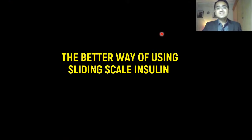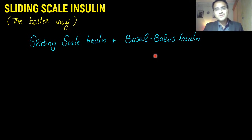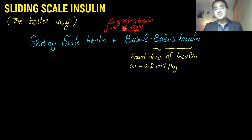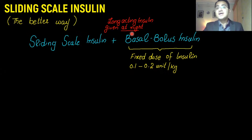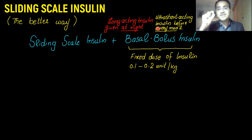The better way of using sliding scale insulin is to combine it with basal bolus insulin. In basal bolus insulin, you give a fixed dose of 0.1 to 0.2 units per kg. The basal part is a long-acting insulin given at night that controls the baseline glucose of the patient. The bolus part is an ultra-short-acting insulin given before each and every meal to control the glucose peak after each meal.